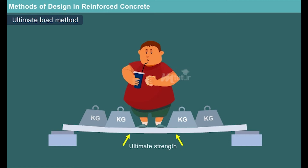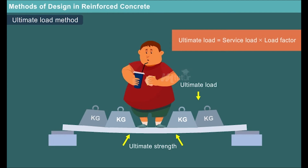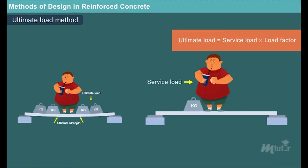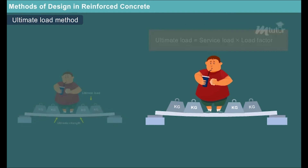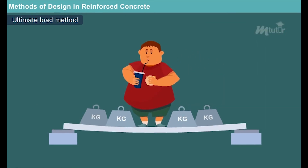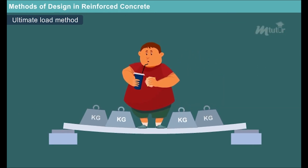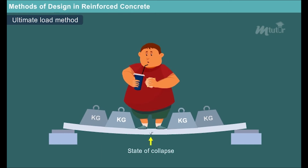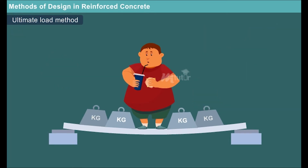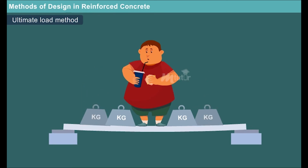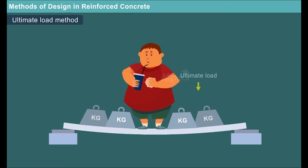The ultimate load method is based on the ultimate strength of reinforced concrete at ultimate load, which is obtained by enhancing the service load by a load factor so as to obtain the desired margin of safety. In this method, the stress condition of a structure is analyzed during the state of collapse using a non-linear stress-strain curve of steel and concrete. The safety of the design is ensured by the proper use of load factors.